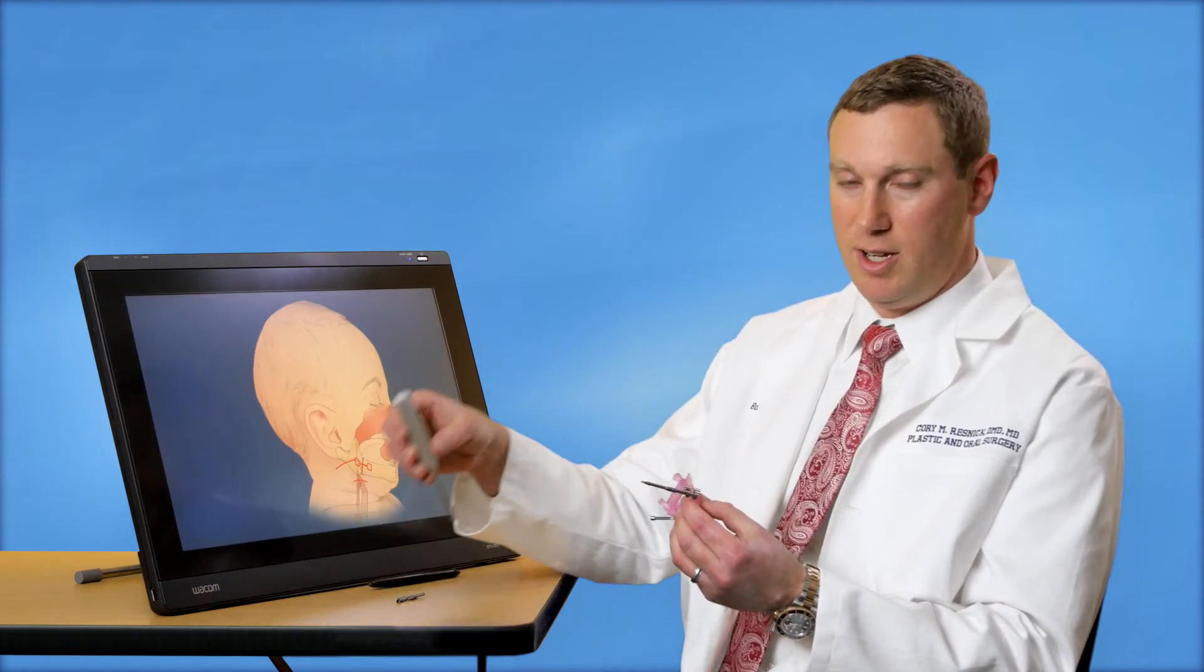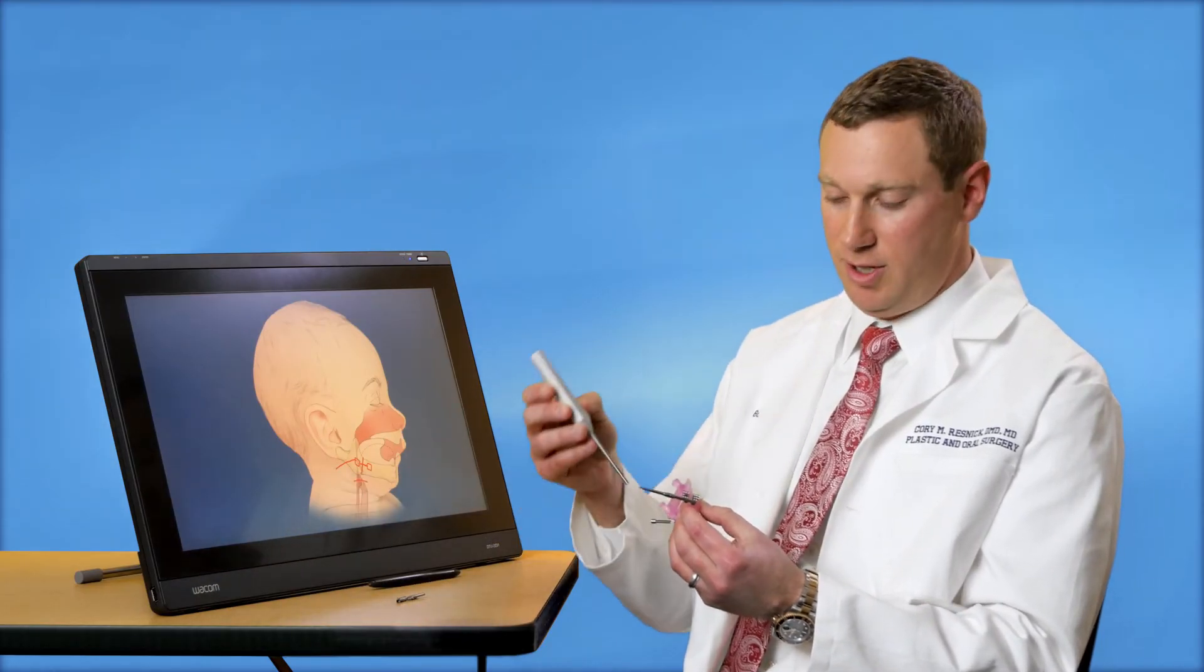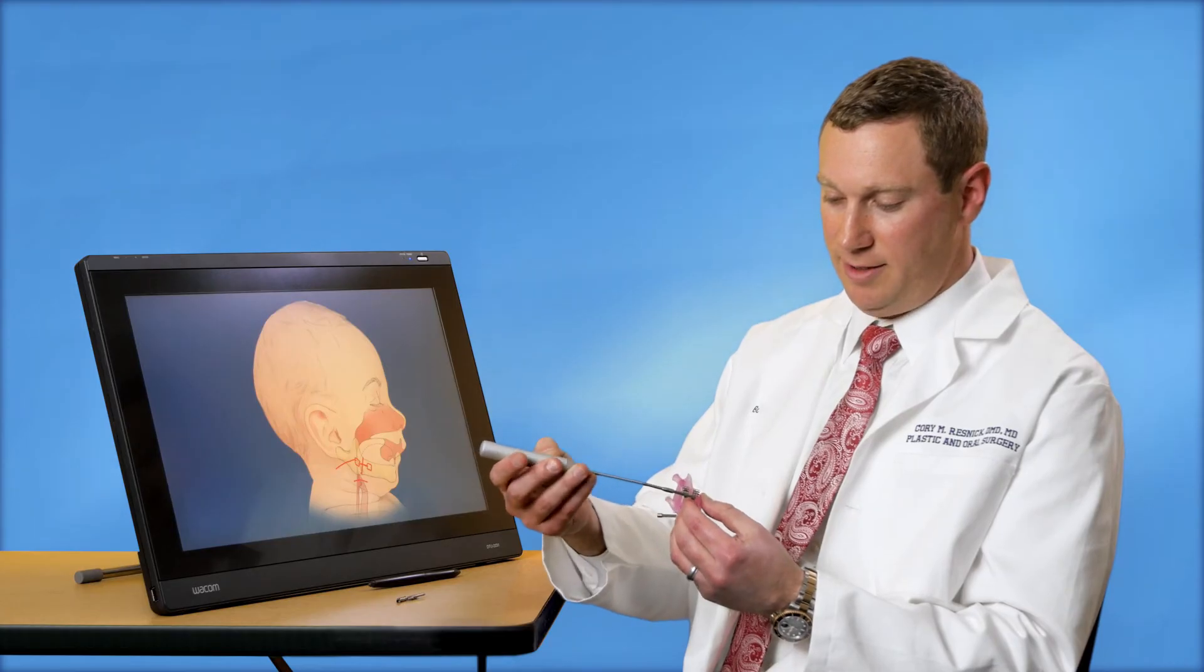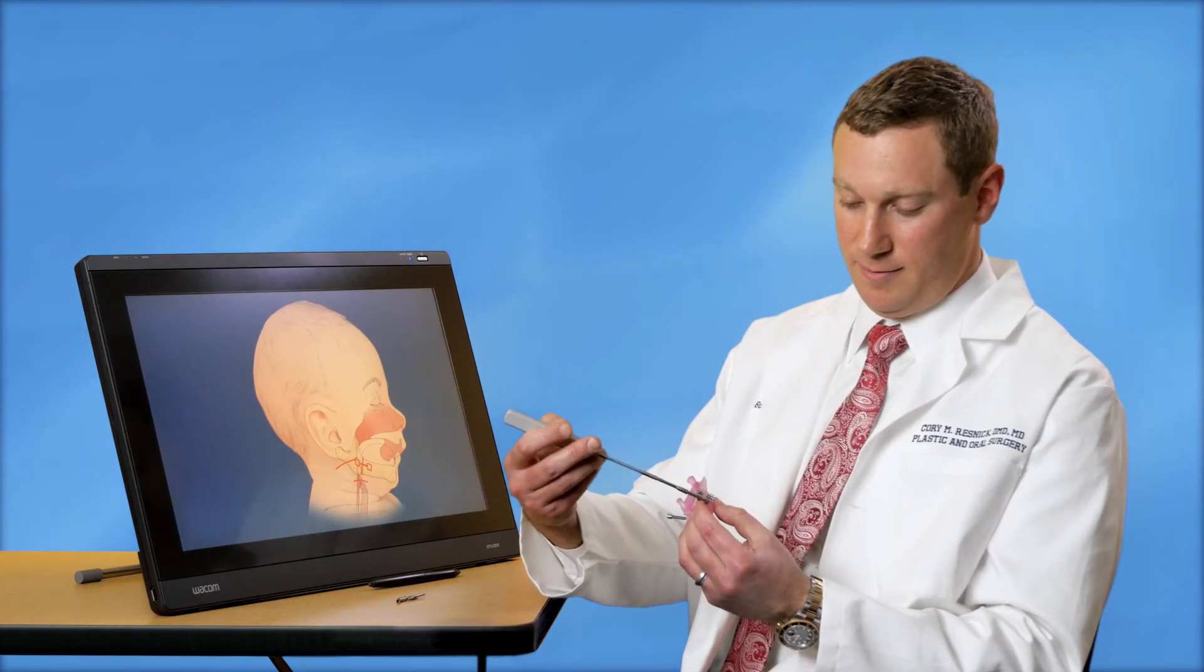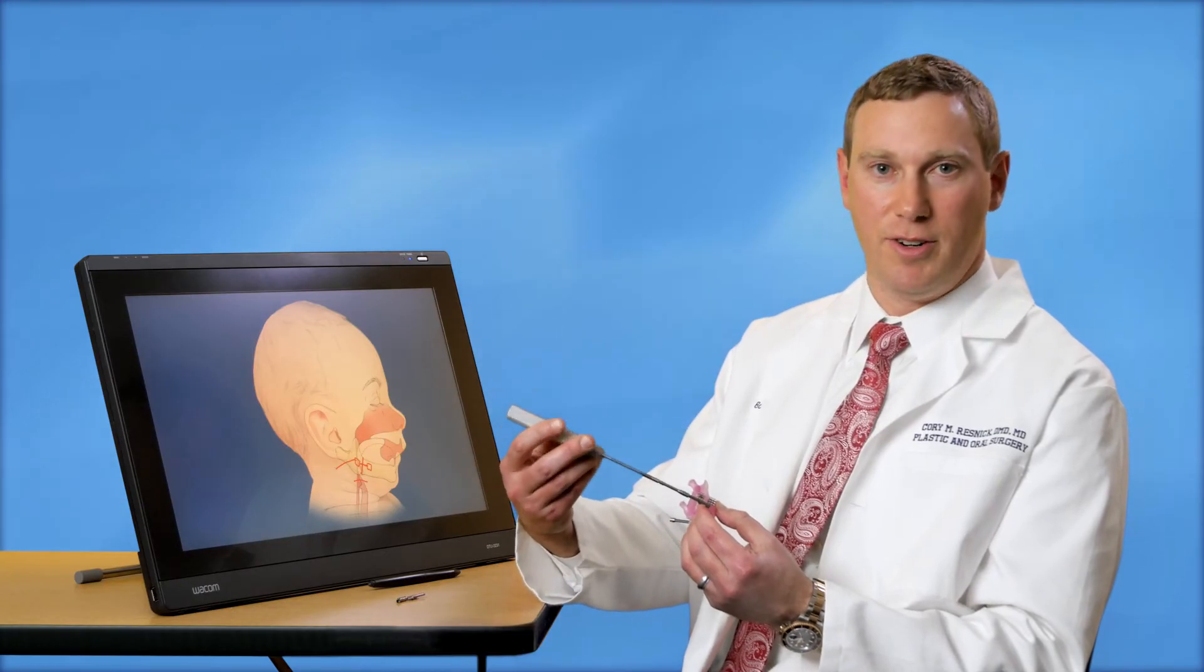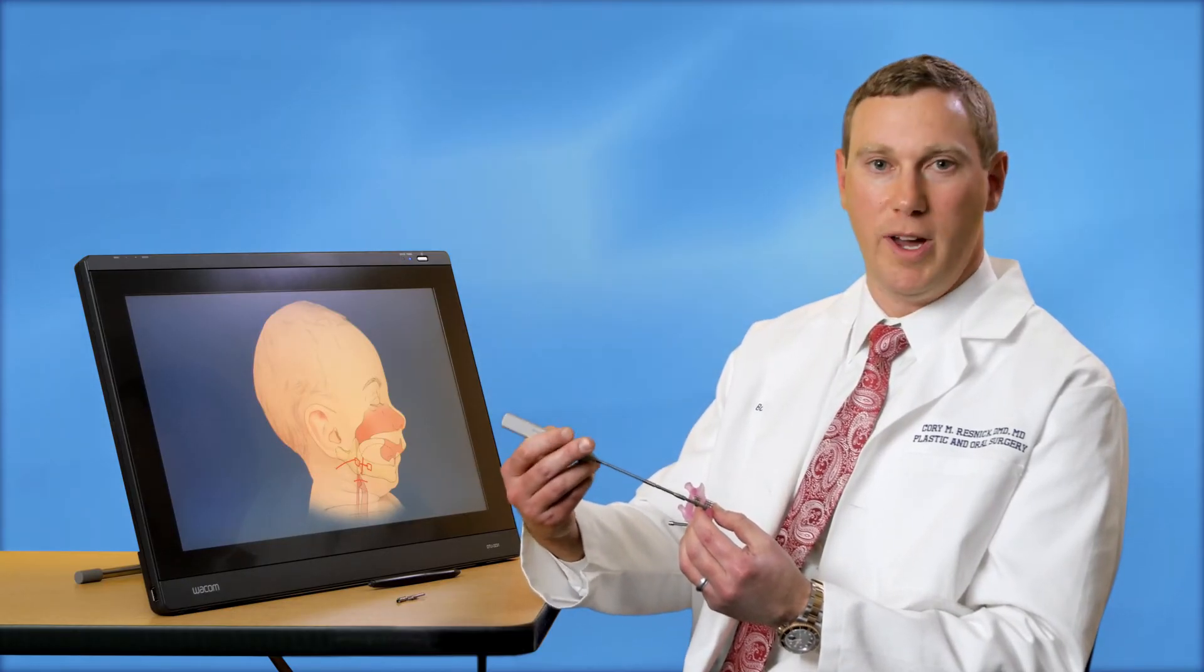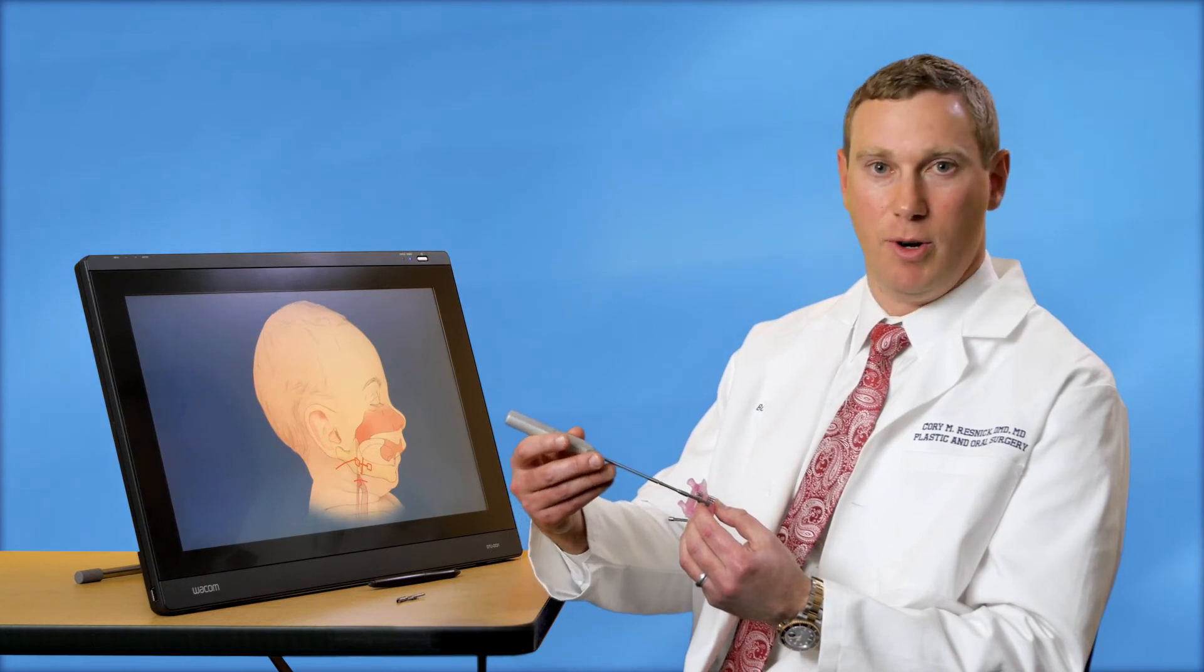After the initial operation, a special screwdriver can be used to advance the device and thereby grow the jaw. As the screwdriver is turned, the two plates of the device move away from one another and create a gap in the jawbone.